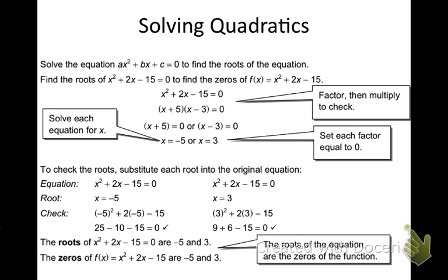Here's the process of solving quadratics. Today this is the shortcut method. The shortcut is only used when there is no A or the A is 1 in front of x squared. If A is not 1, we use the quadratic formula. The shortcut is used when A is 1. For example, if I had 3x squared, I would not use the shortcut — I'd use the quadratic formula. The standard form of an equation is Ax squared plus Bx plus C.